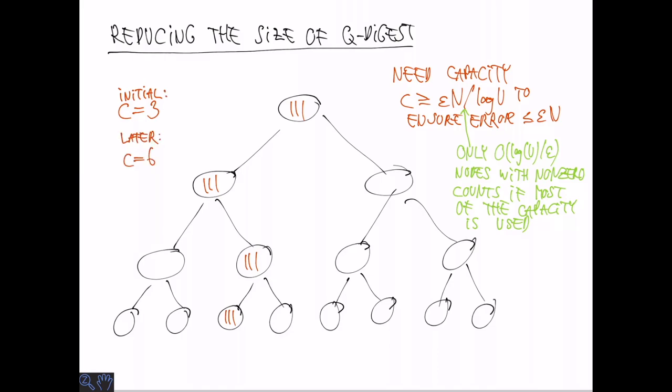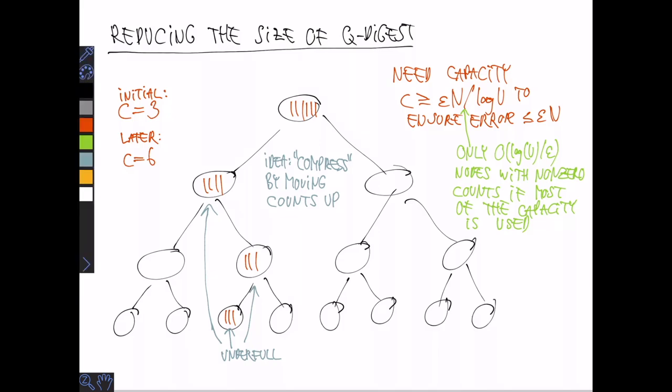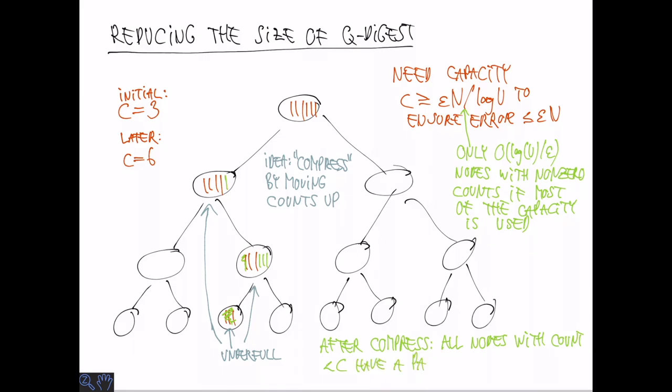So we want to ensure that most of the capacity is actually used. So initially we might have C equals to 3, but at some later point with more elements inserted, we might have C equals to 6. A lot of nodes are suddenly under full and can have more capacity. So the idea is to compress the data structure by moving counts up. In such a way that if your parent is not full, you move a corresponding count up in order to fill it.